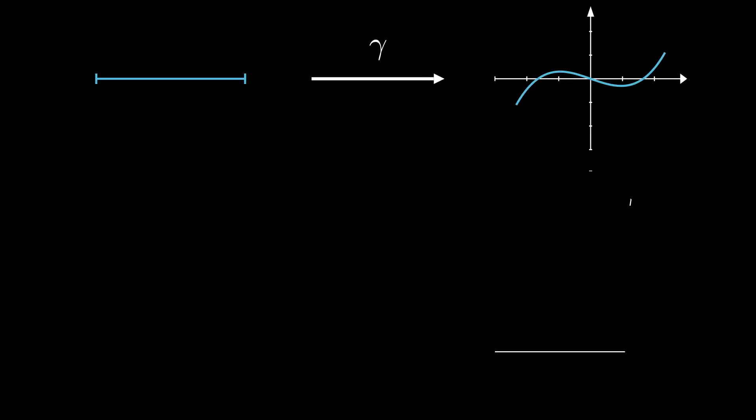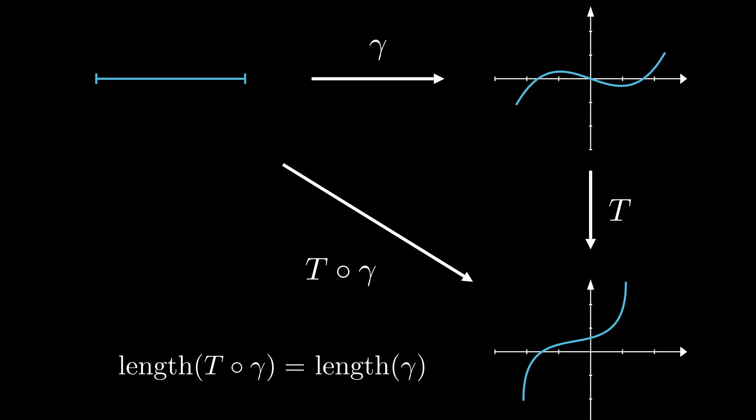The next property has to do with isometries. If T is an isometry, that is, a transformation of the plane that respects distances, then applying it to a curve does not change its length. This is again because one partition of our original curve gives us a partition of the transformed curve with the same length and vice versa.